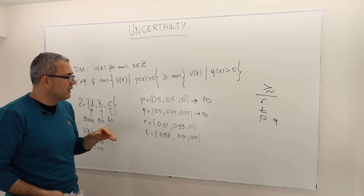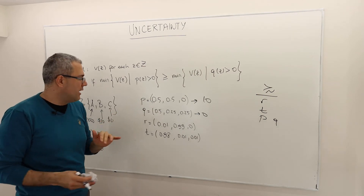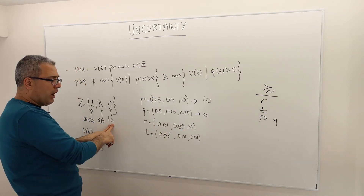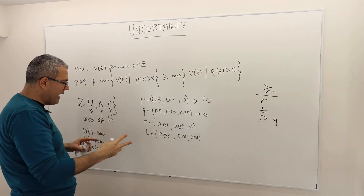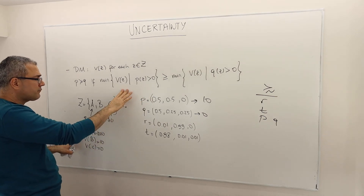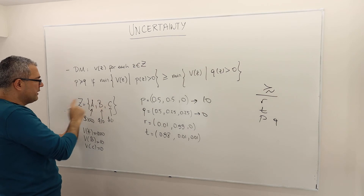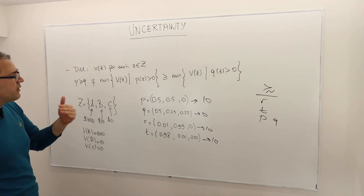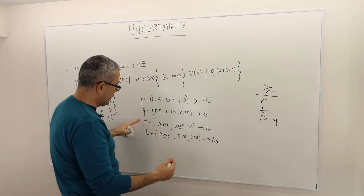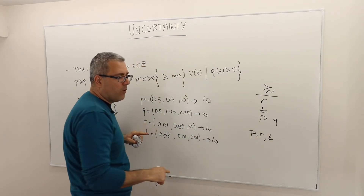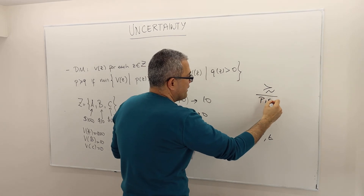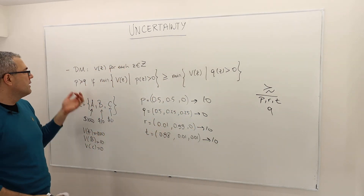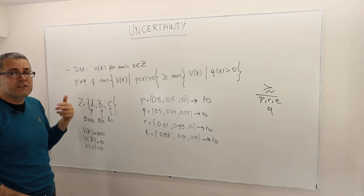This decision maker is, informally speaking, terribly risk averse — he doesn't want to end up with nothing; he wants to win something. When he looks at lottery R, C is again a zero-probability event so he ignores it. The probabilities don't matter here — he's looking at the minimum of the values. Because both A and B have positive probabilities, the minimum is 10. So he also sees 10 for lottery R. Therefore, if the decision maker has this preference relation, he says P, R, and T are all indifferent between each other, but he strongly prefers them over Q because Q's worst-case value is zero.